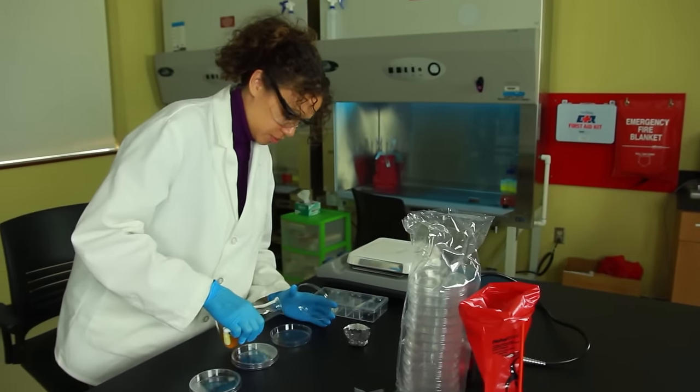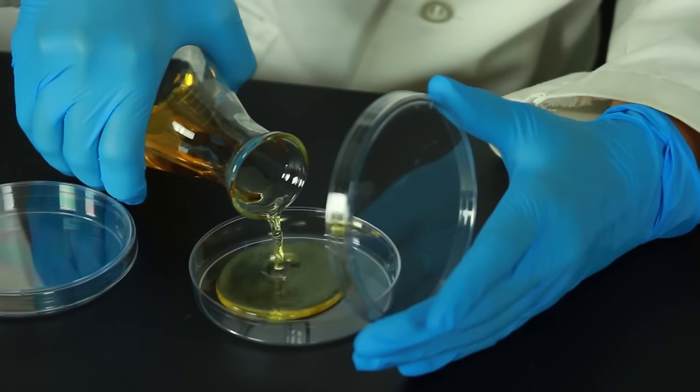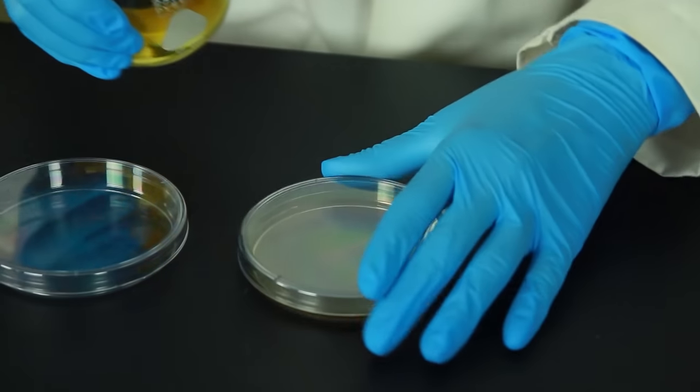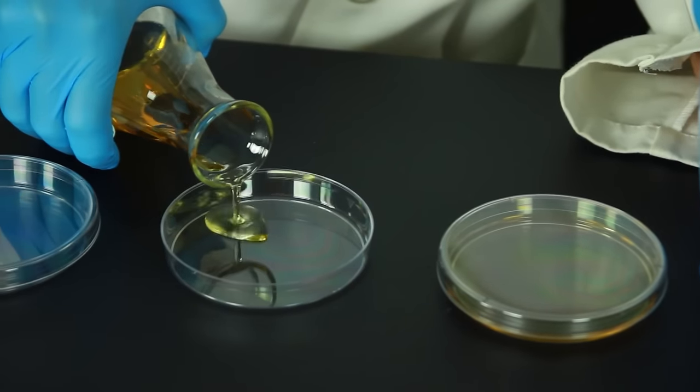Pour the media into the petri dishes. The amounts don't have to be exact, but be sure to cover the entire bottom surface, which is about 20 milliliters for standard size petri dishes.